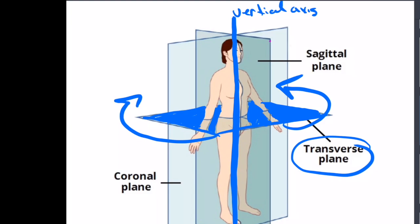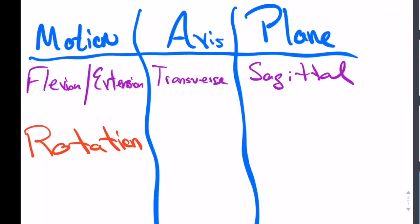It might make sense to you pretty easily, or it might not. In any case, all you need to know is a simple chart: rotation has a vertical axis and a transverse plane.